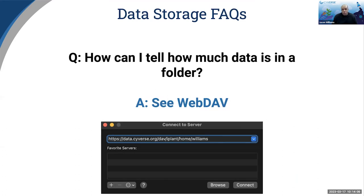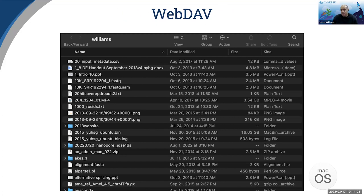The same thing holds for WebDAV. If you go to data.cyverse.org/dav/iClient/home/your-username on your local machine, you can actually connect. This is what it looks like when I do this on my regular file browser — the same would be true on Windows or Linux. Individual files actually have a size, but folders are cleverly marked as dash-dash, meaning you have a folder but you'll need to take a closer look at what's in it.